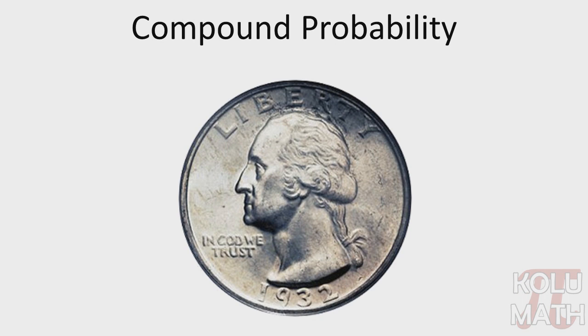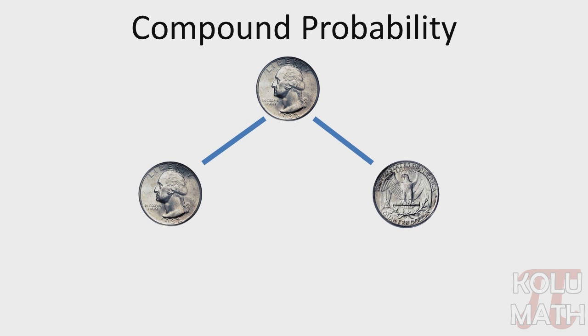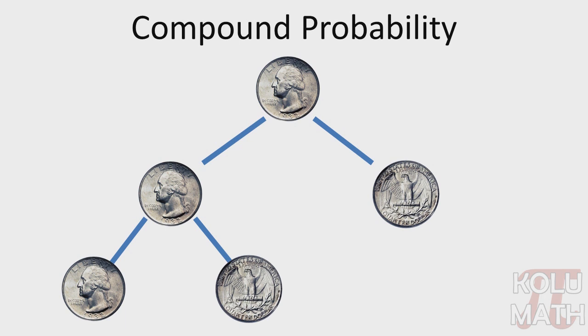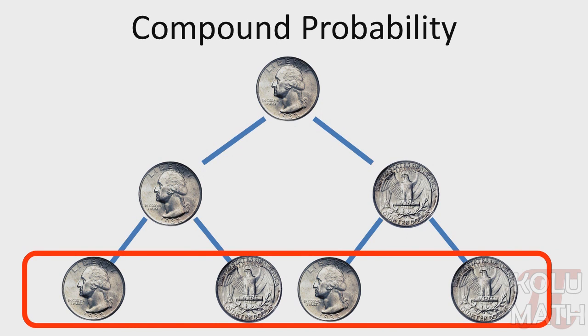Ah, our favorite pastime, flipping quarters and calculating the probabilities. Well, in this case, we're going to be flipping this quarter twice. So on our first flip, we have two possible outcomes, getting a heads or getting a tails. And if we had gotten a heads on our first trial, we have two possible outcomes of getting a heads again or getting a tails. And had we gotten a tails on the first trial, we have the possibilities of getting either a heads or a second tails. So actually, when we look at it, there are four possible outcomes for these experiments.